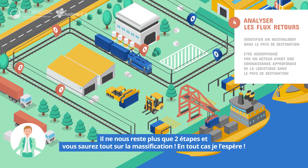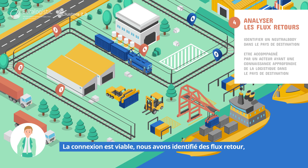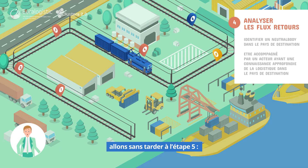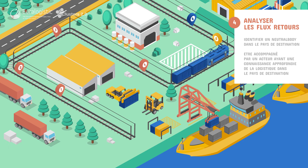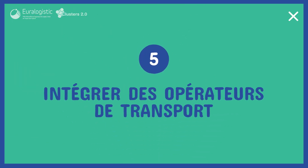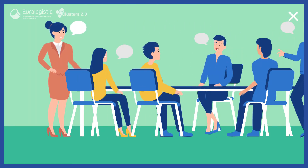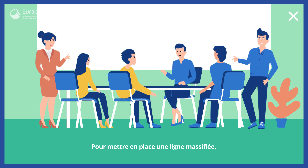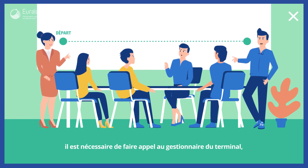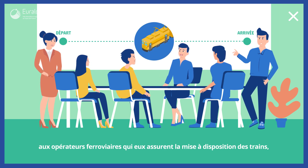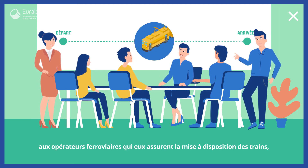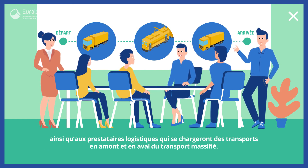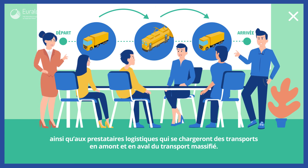Il ne nous reste plus que deux étapes et vous saurez tout sur la massification. La connexion est viable, nous avons identifié des flux-retours, alors allons sans tarder à l'étape 5 : l'intégration des opérateurs de transport. La massification ne concerne pas seulement les chargeurs, mais l'ensemble des acteurs de la chaîne logistique. Pour mettre en place une ligne massifiée, il est nécessaire de faire appel aux gestionnaires du terminal, aux opérateurs ferroviaires qui assurent la mise à disposition des trains, ainsi qu'aux prestataires logistiques qui se chargeront des transports en amont et en aval du transport massifié.